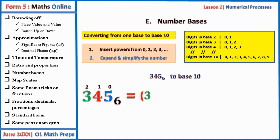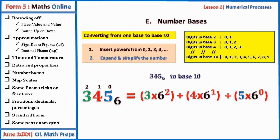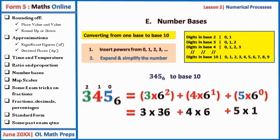Let's convert 345 base 6 to base 10. Write down 345 base 6. There are three digits, so insert powers from zero: the rightmost digit gets power zero, the next power one, and the leftmost power two. Then expand: 3 × 6² + 4 × 6¹ + 5 × 6⁰. Simplifying: 6² = 36, so we have 3 × 36 + 4 × 6 + 5 × 1 = 108 + 24 + 5 = 137 base 10.